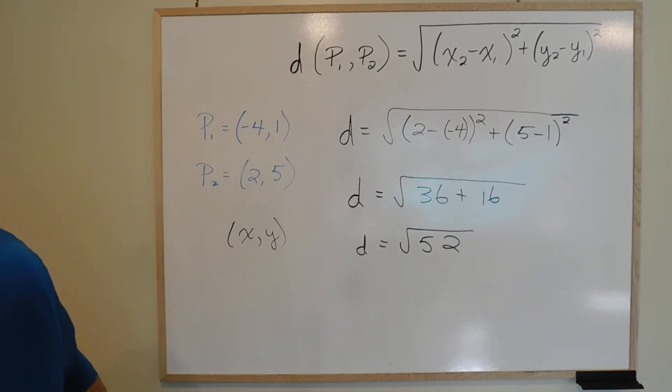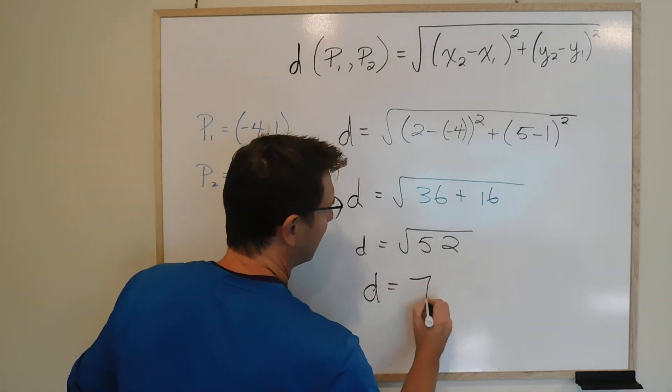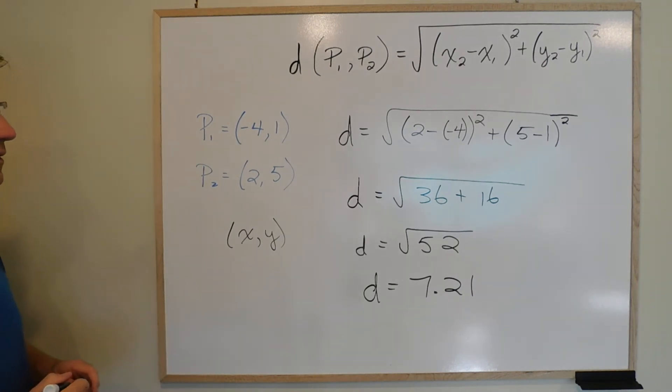And we end up with 7.21, 7.2, it's actually 7.211 stuff. But to 2 decimal places, 7.21, okay? So that's the distance, 7.21.